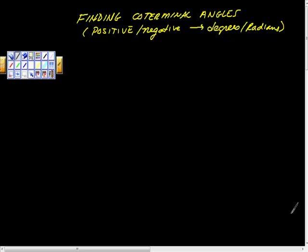So, finding coterminal angles, positive and negative, and also we're going to do it in degrees and radians and all this and more in 7 minutes or less. So let's get right to it. Remember, coterminal angle means an angle that has the same terminal ray as another one. So if you don't mind, let's do radians first.